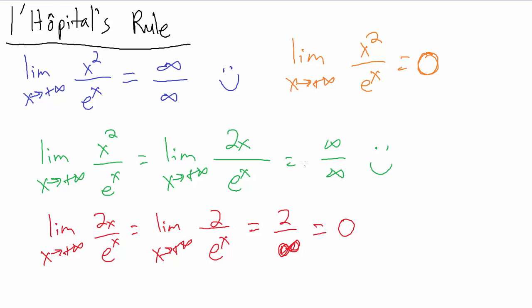We had to use L'Hôpital's rule twice, and that's okay — sometimes you might have to use it more than once. We eventually reached a point where we had a constant divided by something that grows without bound as x goes to infinity, giving us 0. That's another example of using L'Hôpital's rule, with more examples coming up in the next few videos.